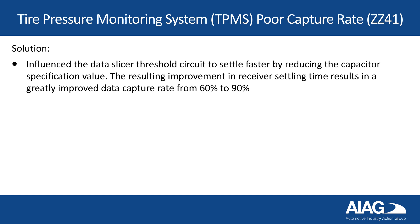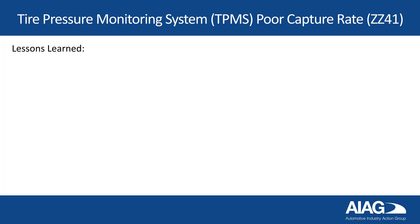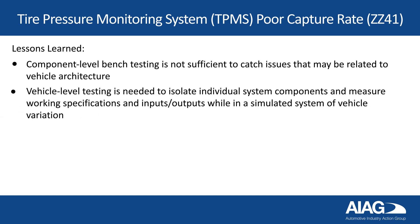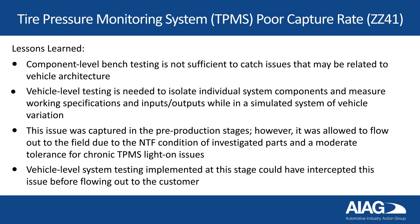The quick field fix is the interim corrective action and the production countermeasure and recurrence prevention is the permanent corrective action. The lessons learned: component-level bench testing is not always sufficient to catch issues that may be related to vehicle architecture. This was a system-level problem requiring whole vehicle investigation. Thus, vehicle-level testing is needed to isolate individual system components and measure working specifications and inputs/outputs while in a simulated system of vehicle variation. This issue was captured in pre-production stages; however, it was allowed to flow out to the field due to NTF condition of investigated parts and moderate tolerance for chronic TPMS light-on issues. There were multiple occurrences in production, but no deep dive into a resolution. Vehicle-level system testing implemented at this stage could have intercepted this issue before flowing out to the customer.